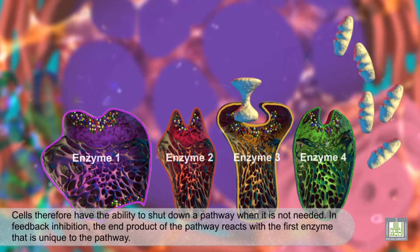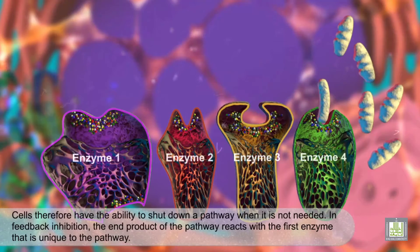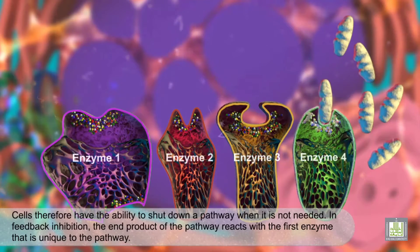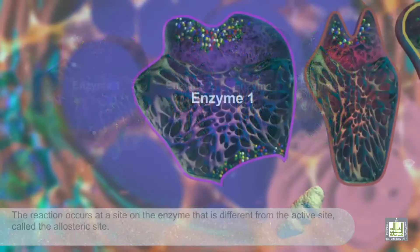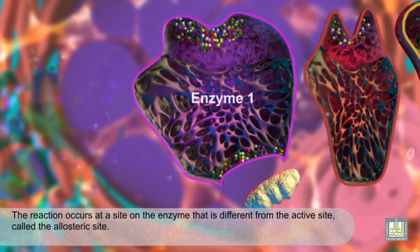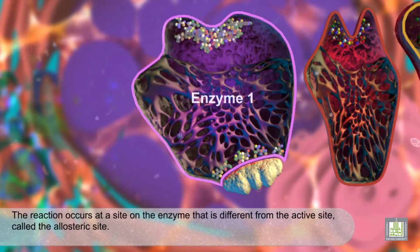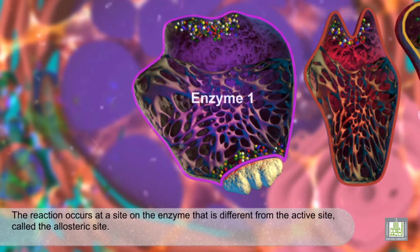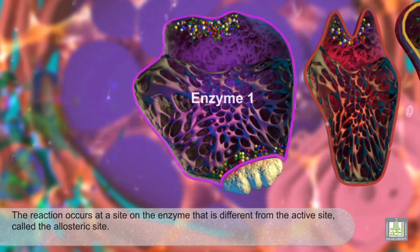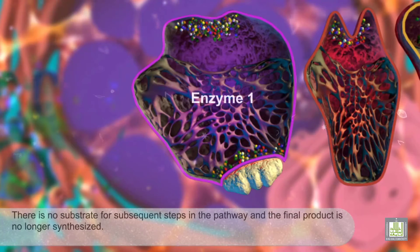In feedback inhibition, the end product of the pathway reacts with the first enzyme that is unique to the pathway. The reaction occurs at a site on the enzyme that is different from the active site, called the allosteric site.